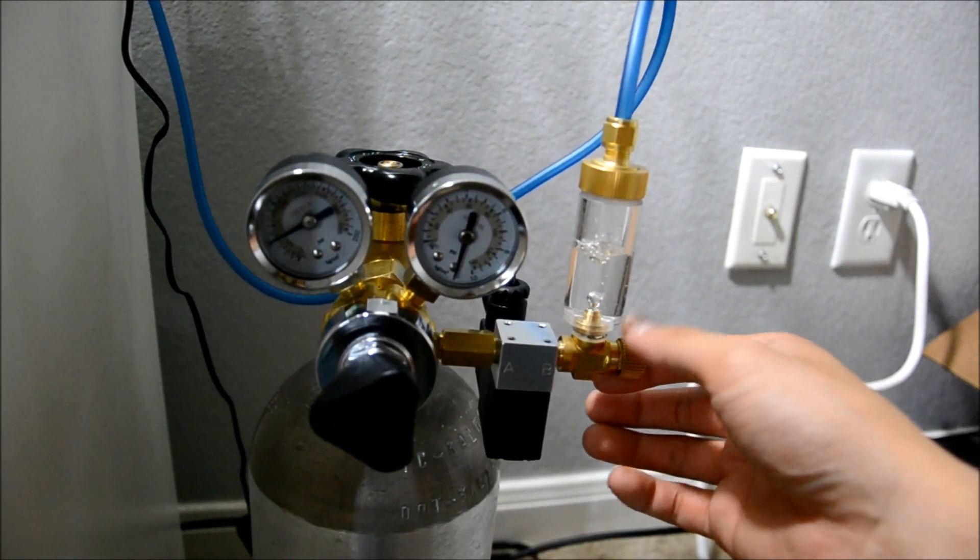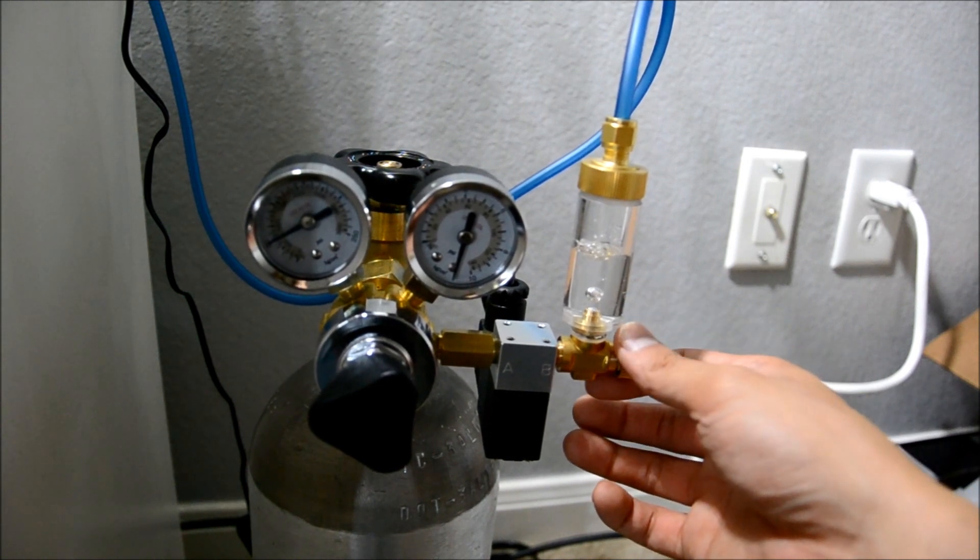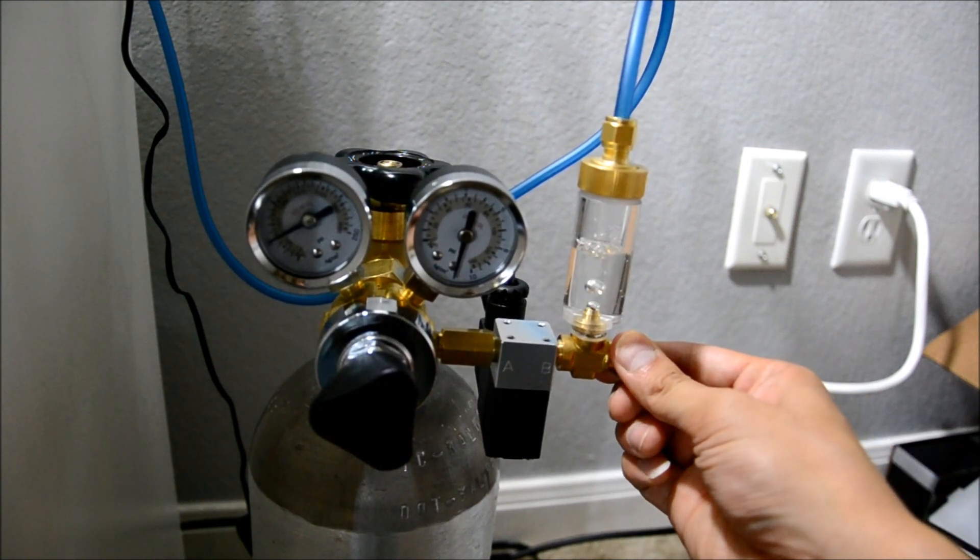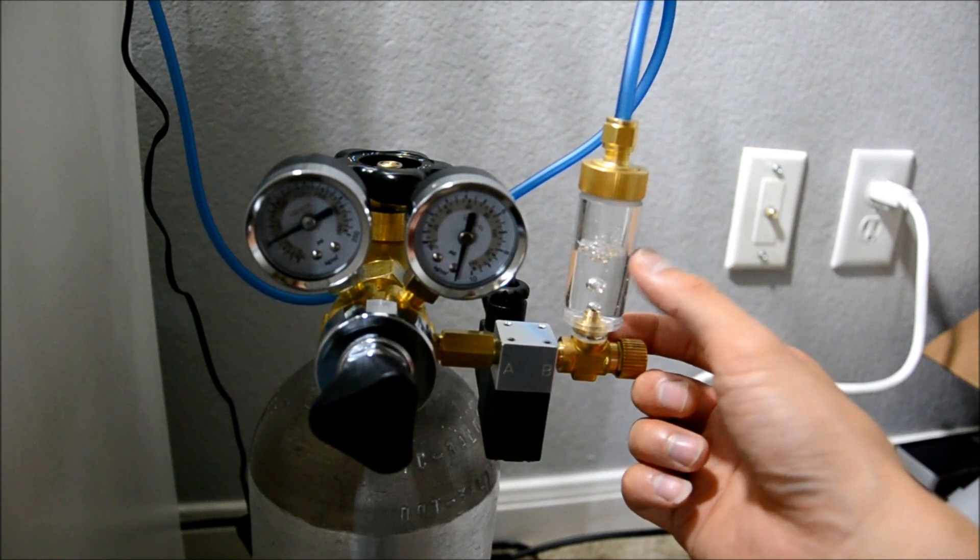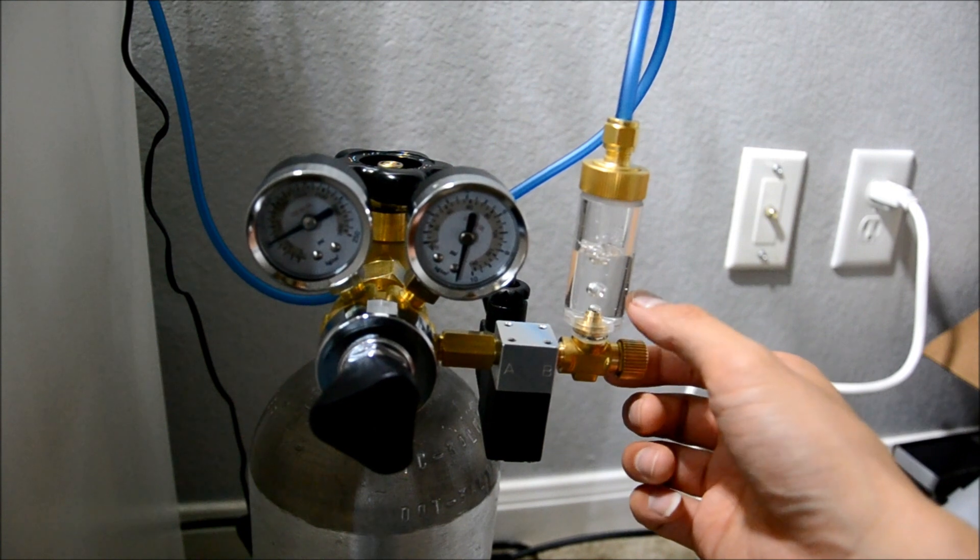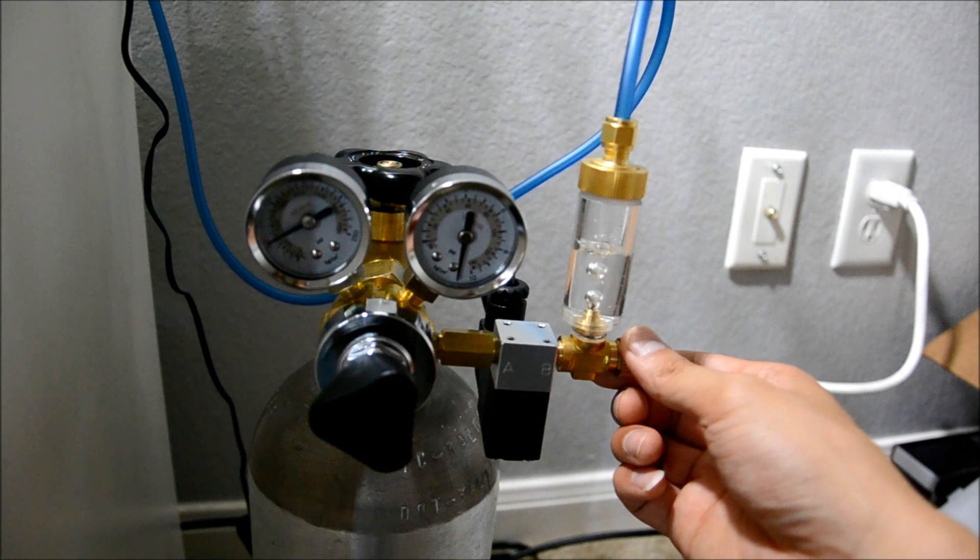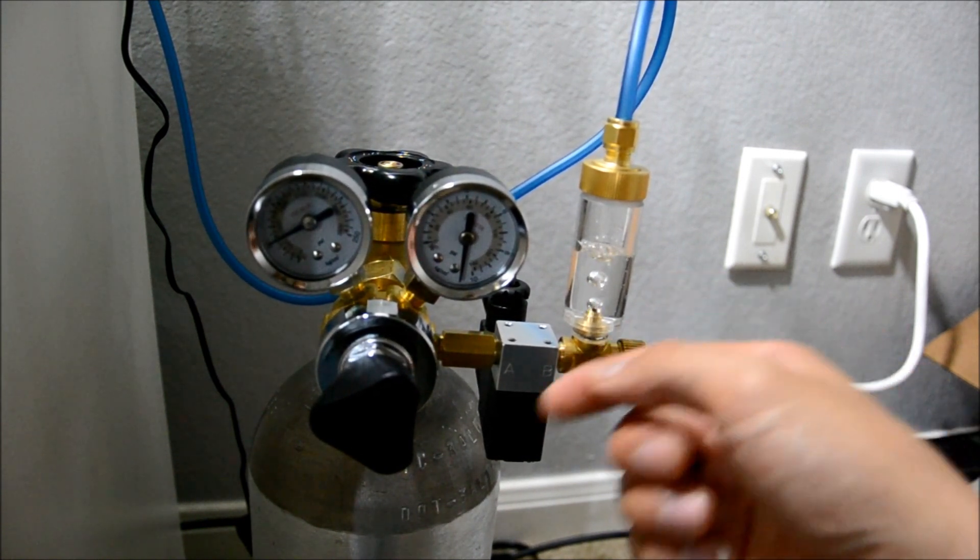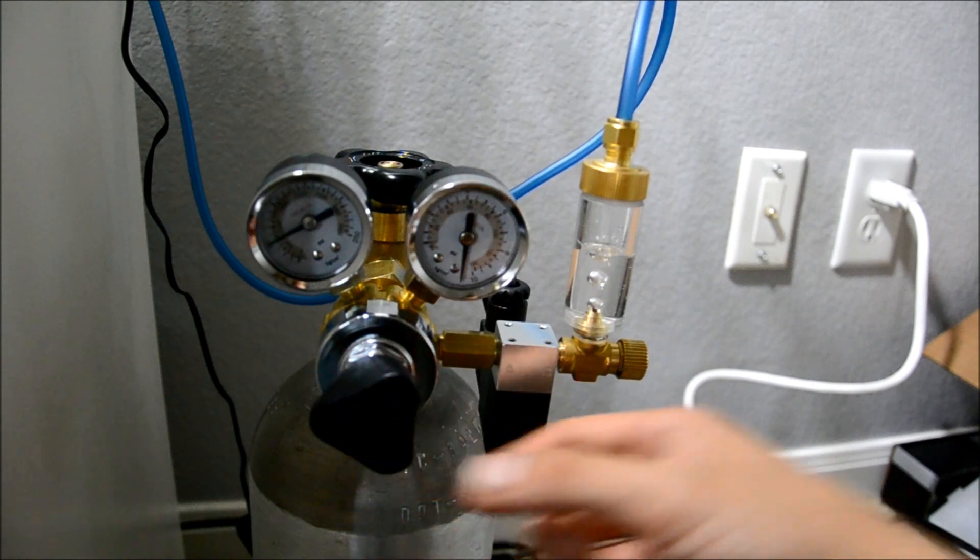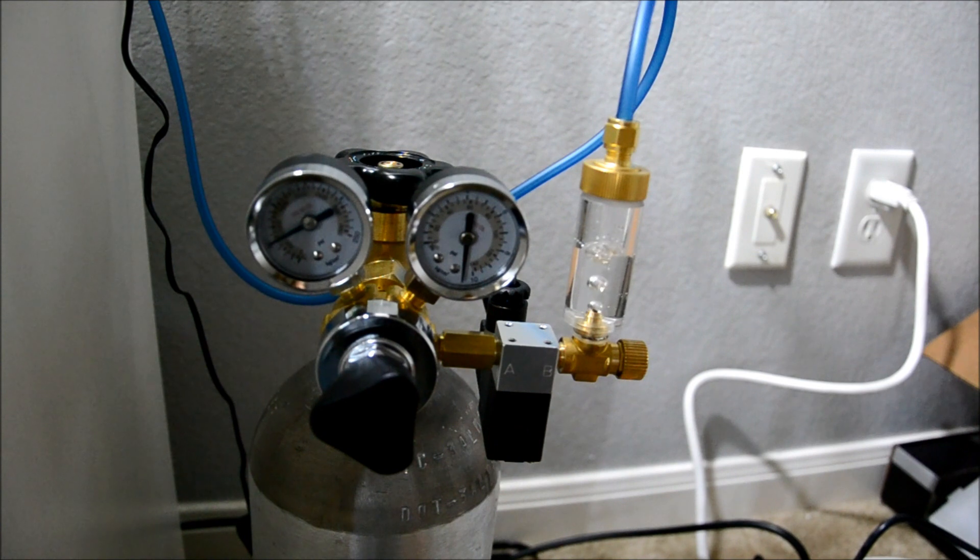And then on this side, for your bubbles, you want to start off with maybe two per second. So right now it's maybe like one and a half. And you can fine tune this basically with this bubble counter here. So you actually can see it's coming out a little bit faster. And you see how this is like maybe two, two bubbles a second. And essentially you're going to play with this for a while to dial it in. And that's pretty much it.